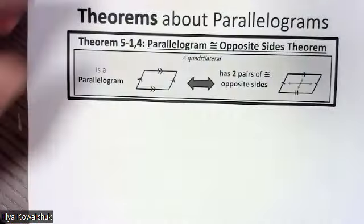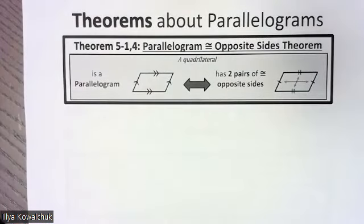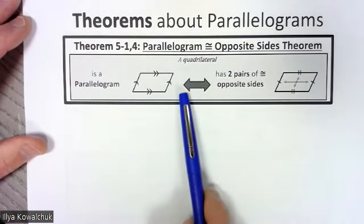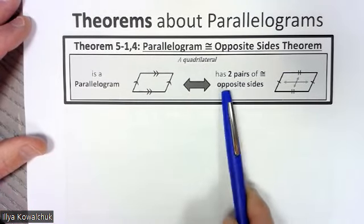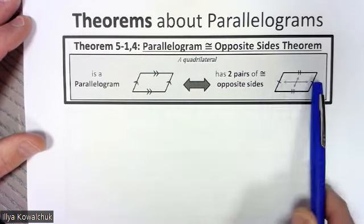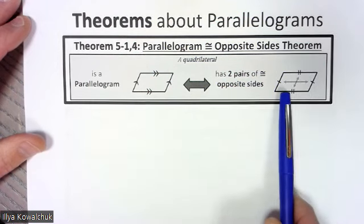Let's go down to our theorems about parallelograms. You should have notes taken on this already. Theorem 5.1 and its converse 5.4 are about parallelograms and congruent opposite sides. A quadrilateral is a parallelogram if and only if it has two pairs of congruent opposite sides — and that goes both ways.